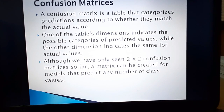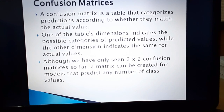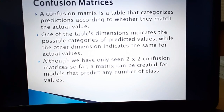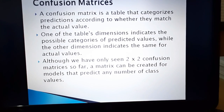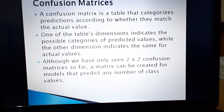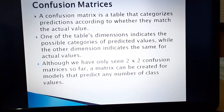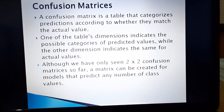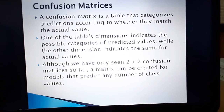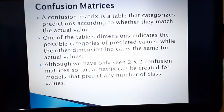The goal of evaluating a classification model is to have a better understanding of how its performance will extrapolate to future cases. The confusion matrix is a table that categorizes predictions according to whether they match the actual value. In one dimension it indicates the possible categories of predicted values, and in the other dimension it indicates the same for actual values.